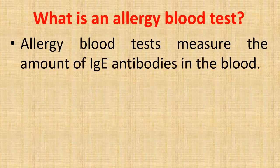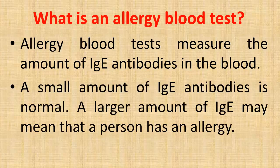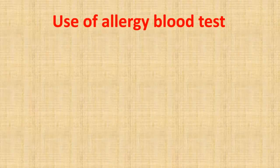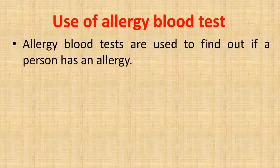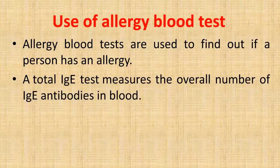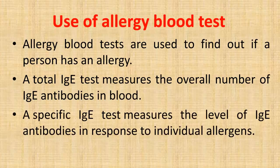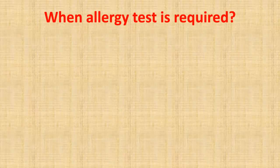Allergy blood tests measure the amount of IgE antibodies in the blood. A small amount of IgE antibodies is normal, but a larger amount of IgE may mean that a person has an allergy. A total IgE test measures the overall number of IgE antibodies in blood, while a specific IgE test measures the level of IgE antibodies in response to individual allergens.